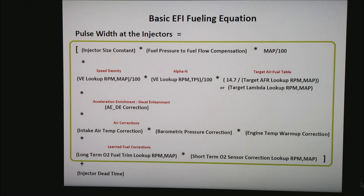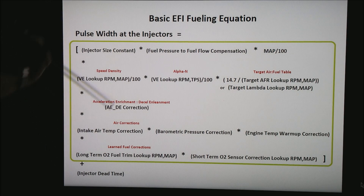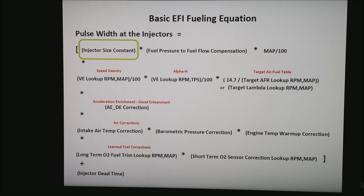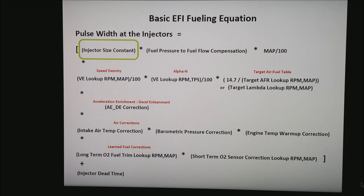In green I've highlighted everything that is multiplied together to come up with the base pulse width. In the upper left corner is a bracket, and between every piece of this is a multiply, all the way down. We'll take on each one of these one at a time. First is the injector size constant. What this constant does is give the ECU a basis to know just how big the injector is compared to how big the motor is. The bigger the motor, the longer it has to spray the injector.